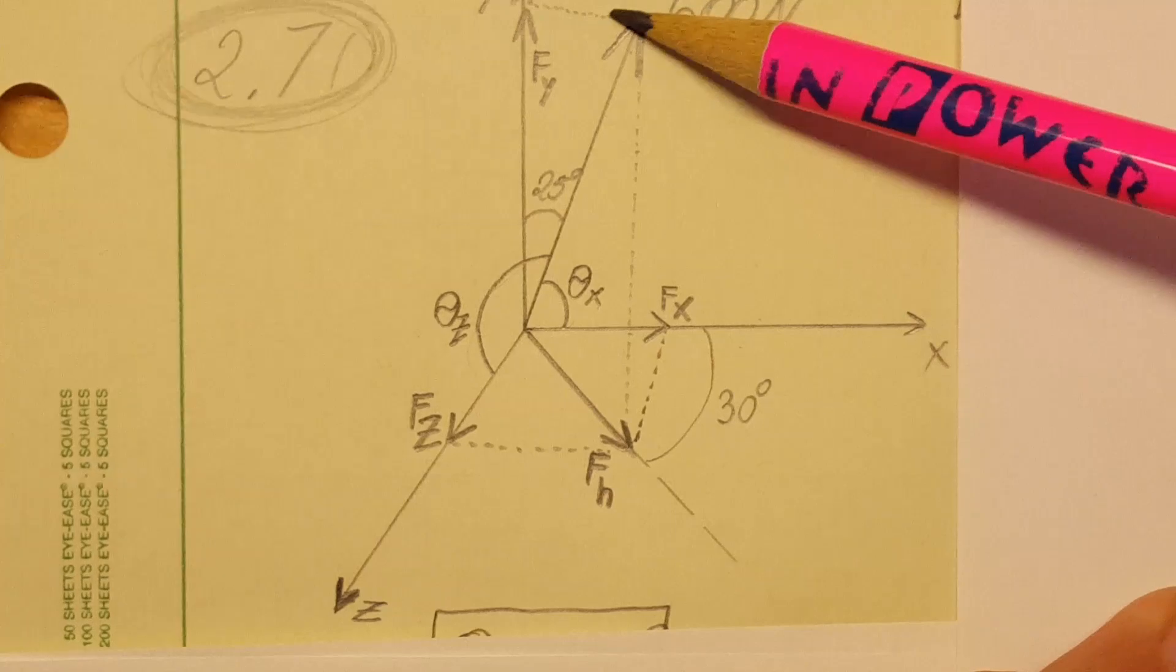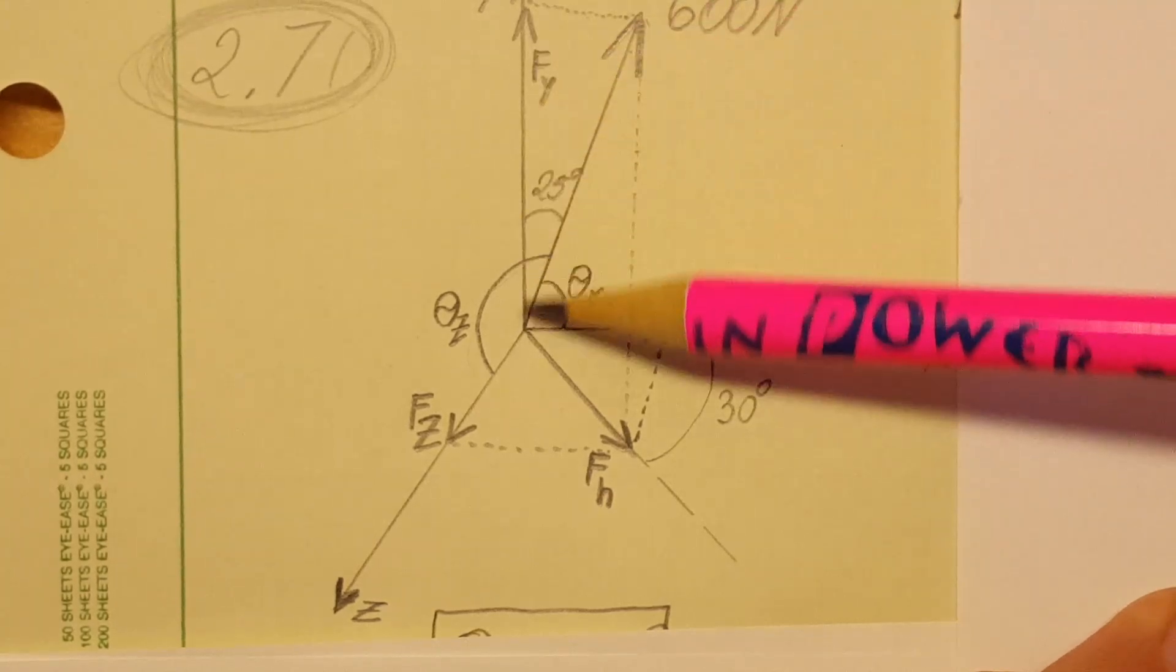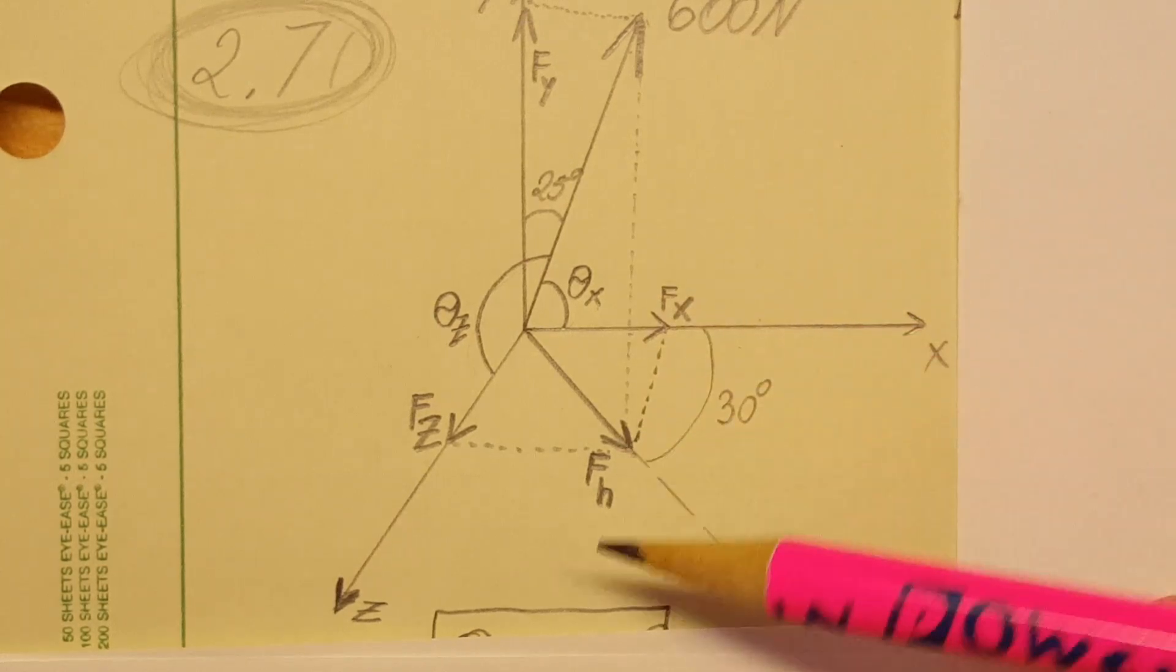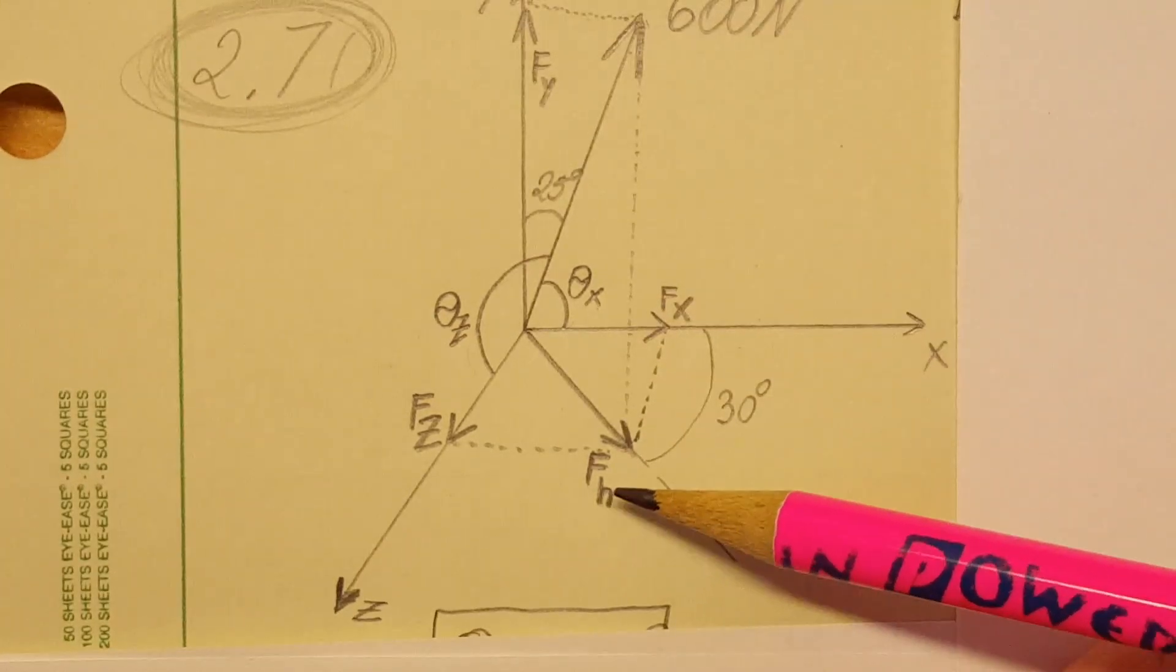First I drew the y component up here. Right here if you can see it, then I dropped it down here and this will be my fh. This is just an intermediary tool that we're going to use.